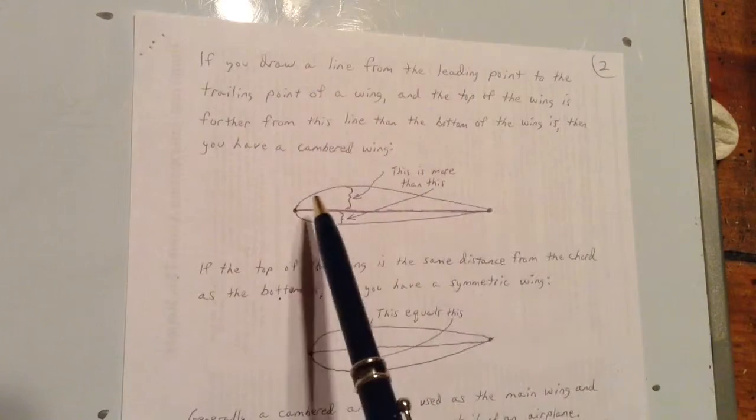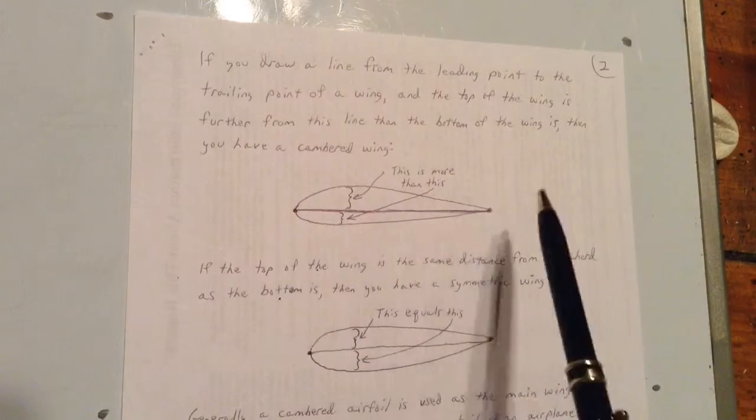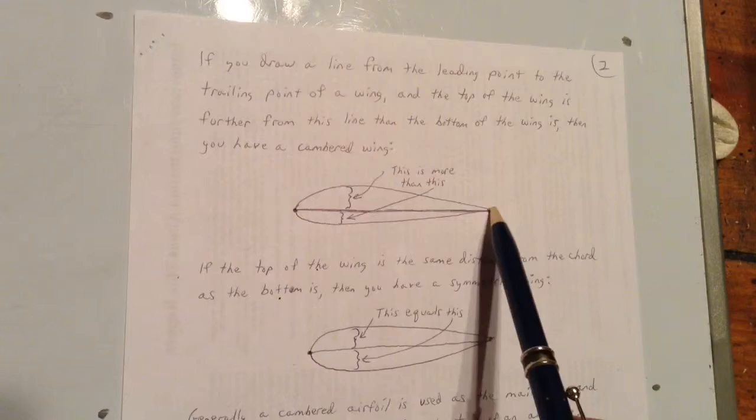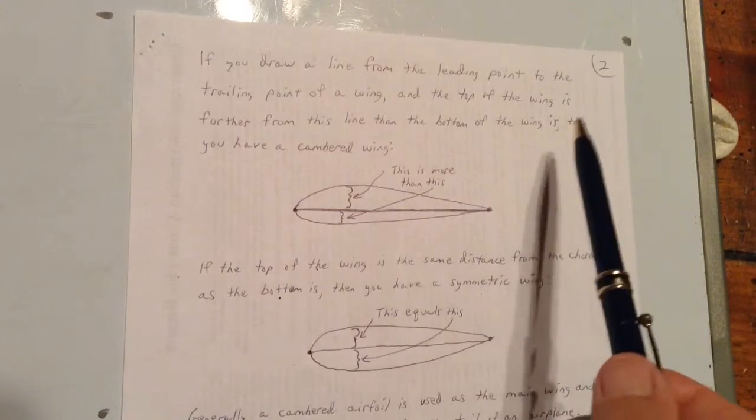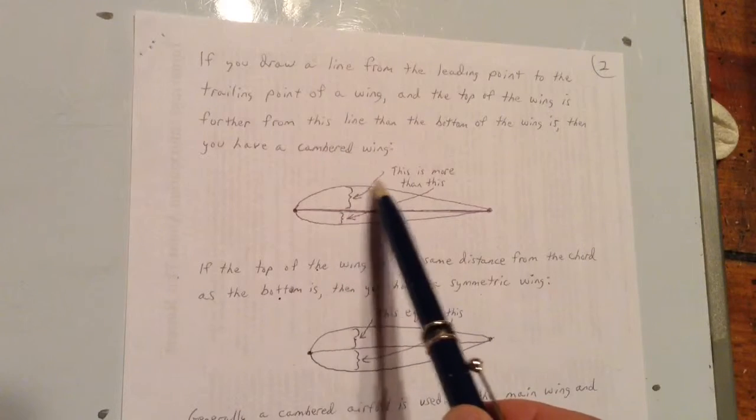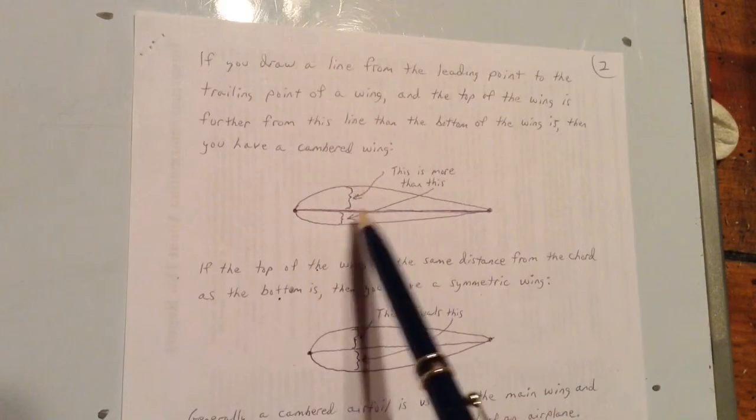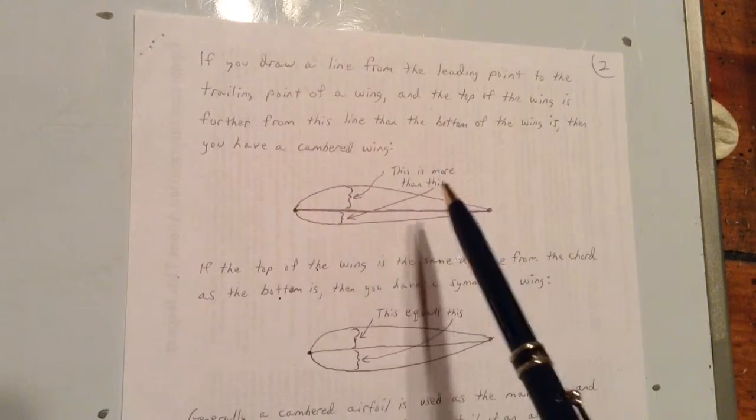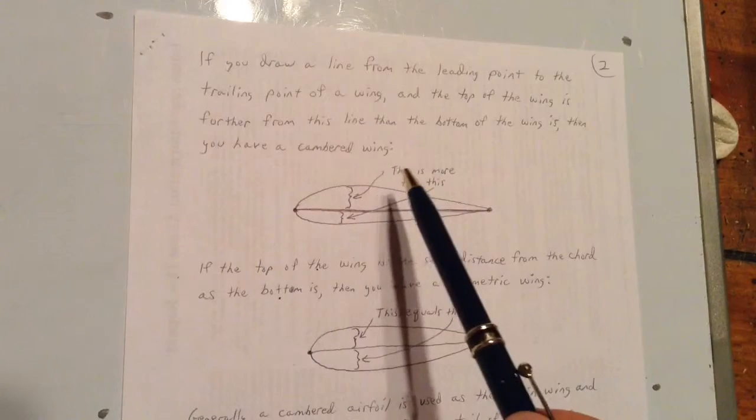If you draw a line from the leading point right there to the trailing point of a wing, and the top of the wing is further from the line, see right there? The top of that wing is further from this line than the bottom of the wing is. Then you have a cambered wing.